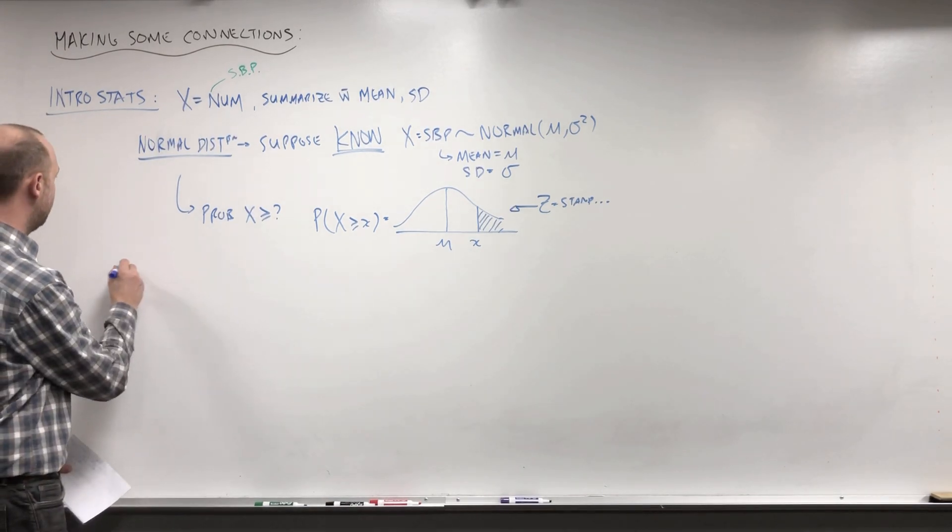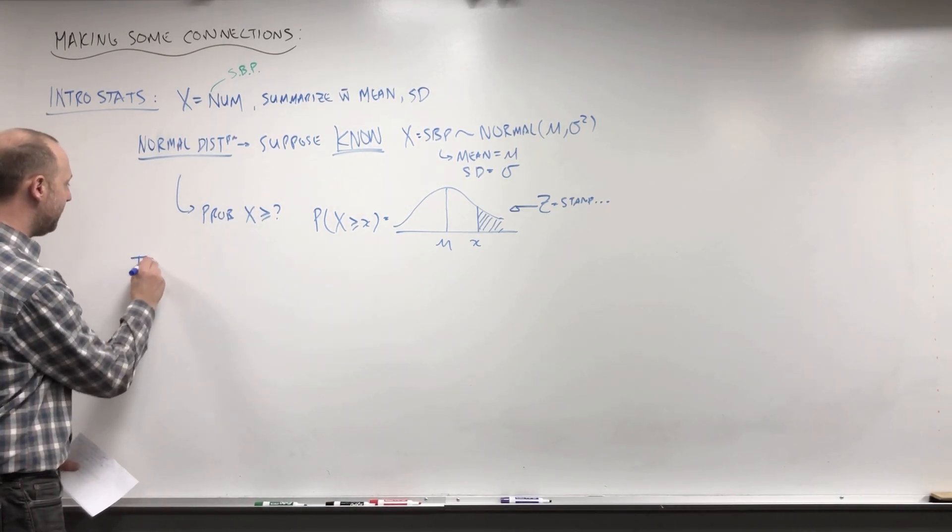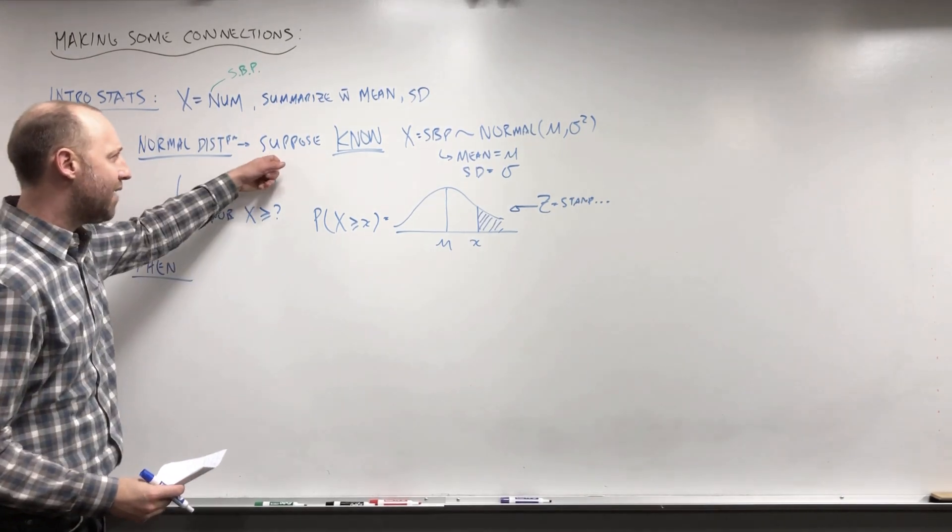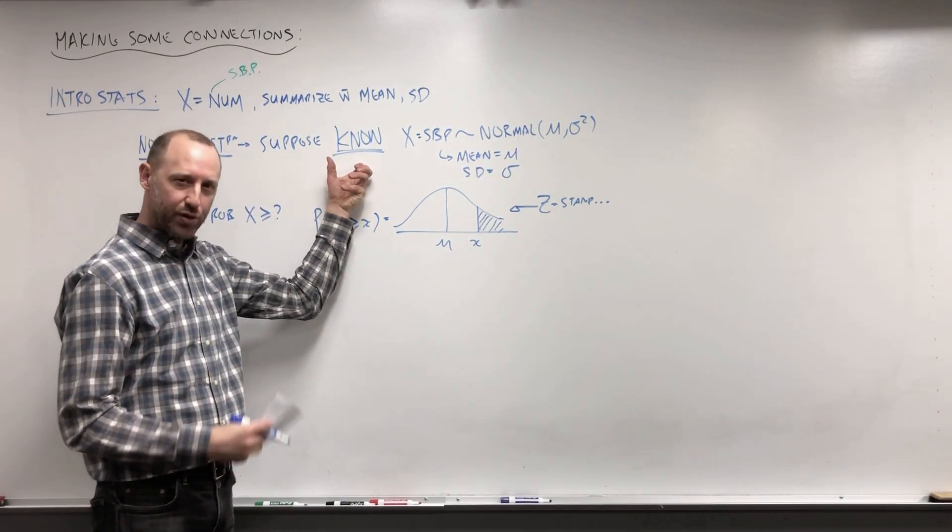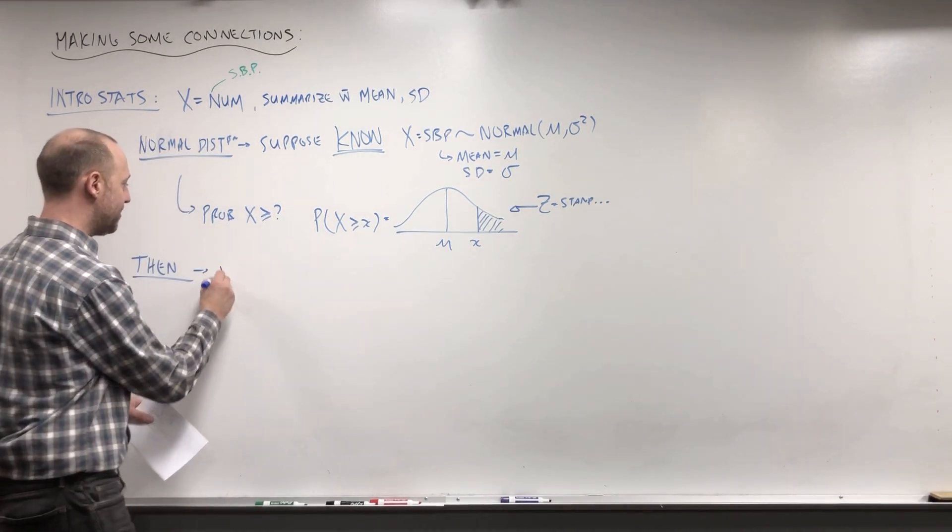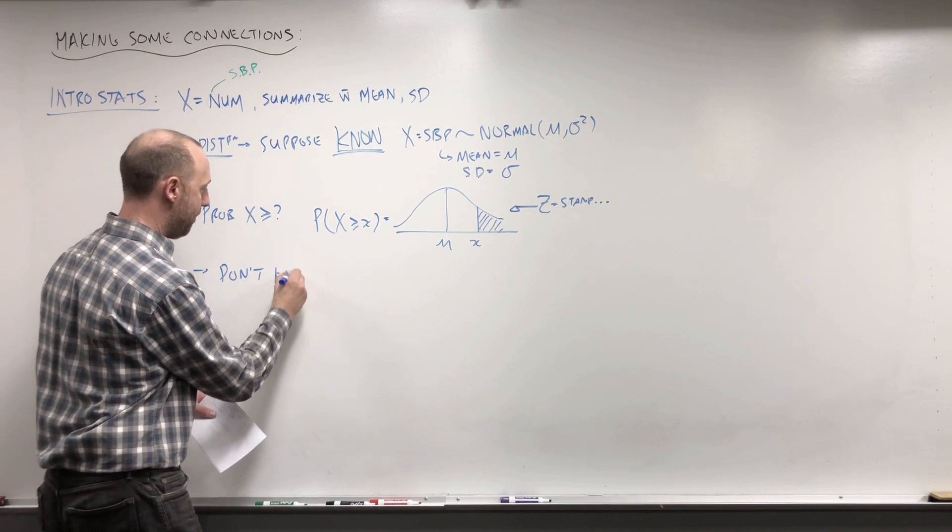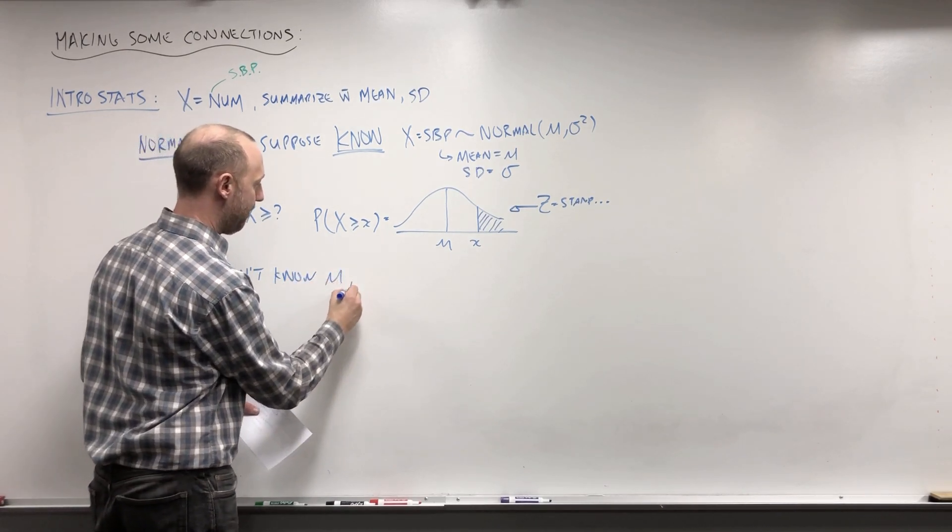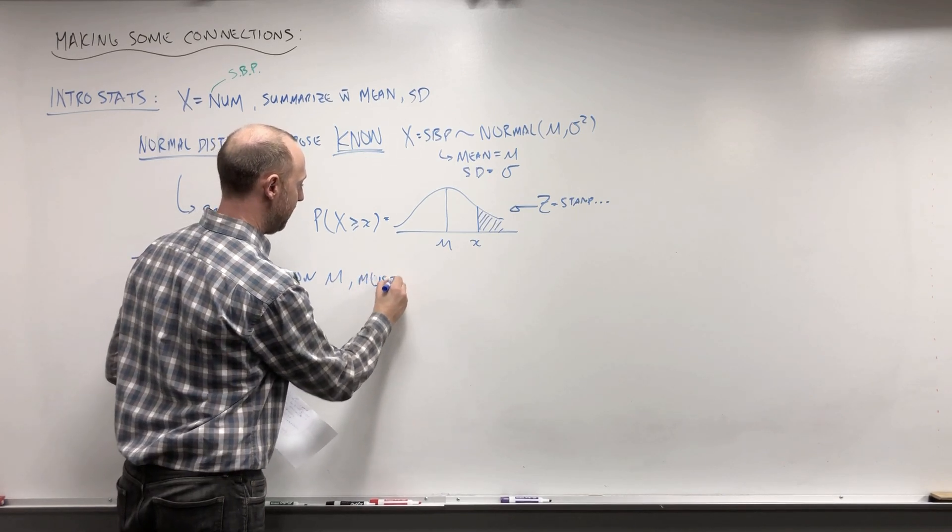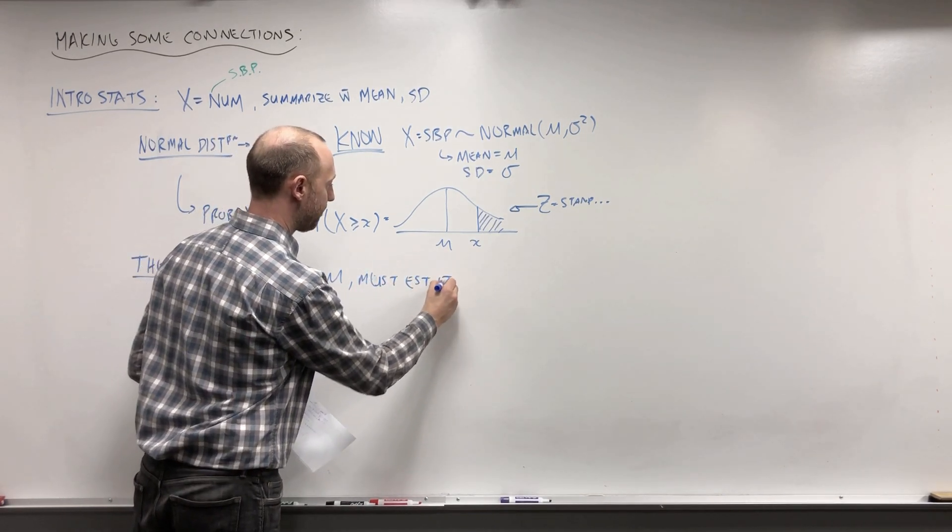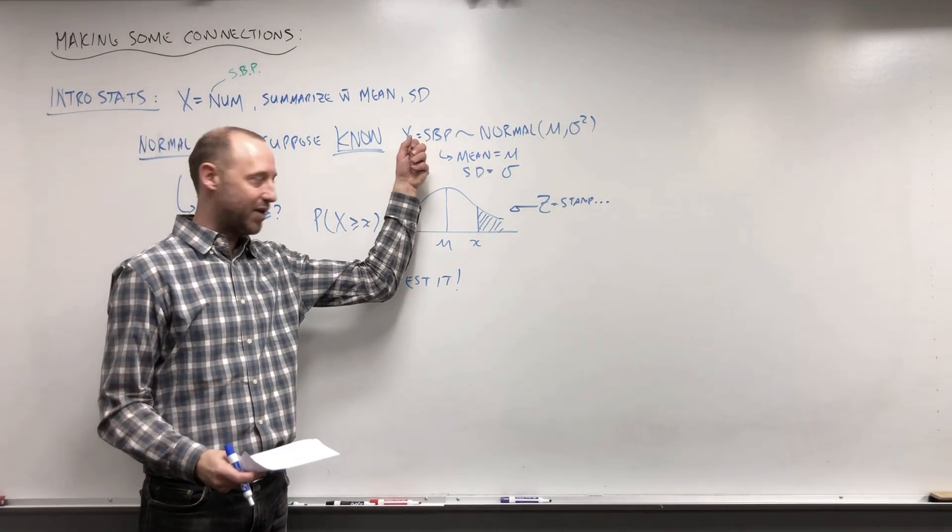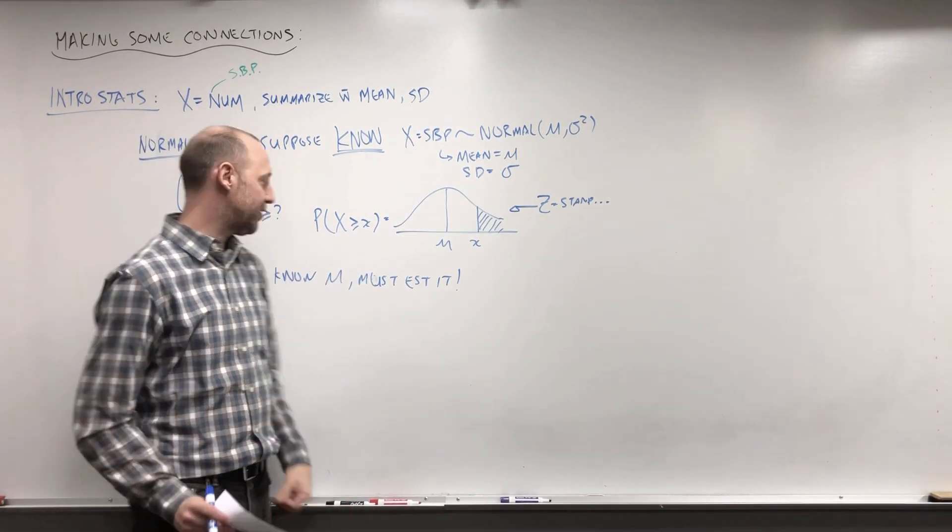Then, this is still in any kind of intro stats umbrella. After you've built this theory where if we know the truth, how do samples behave, you move into acknowledging that you don't know the mean. You must estimate it. So you acknowledge, well, we don't actually know the mean systolic blood pressure for a population. We've got to take a sample and try and estimate that.